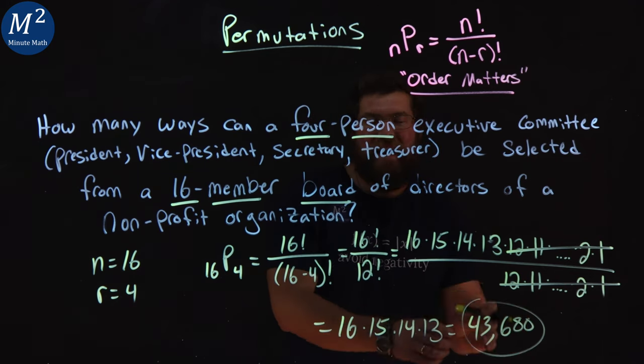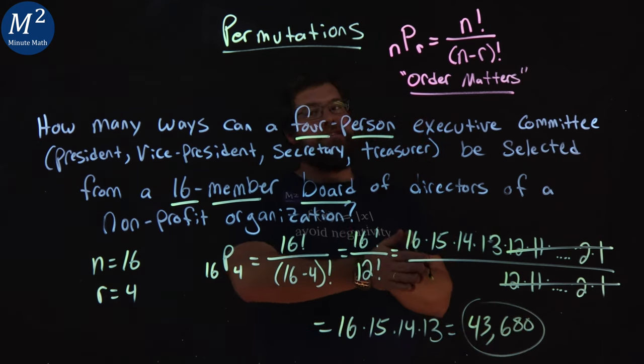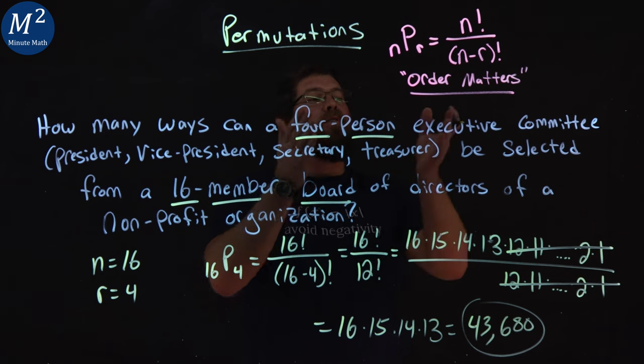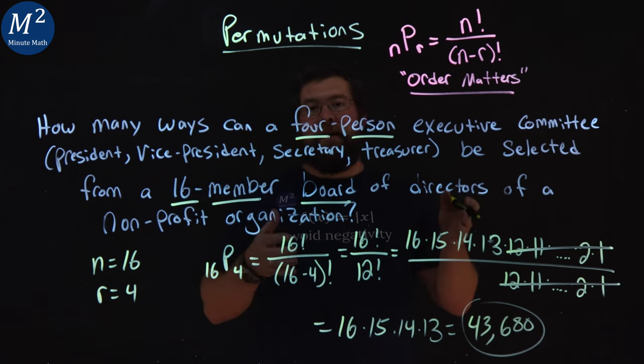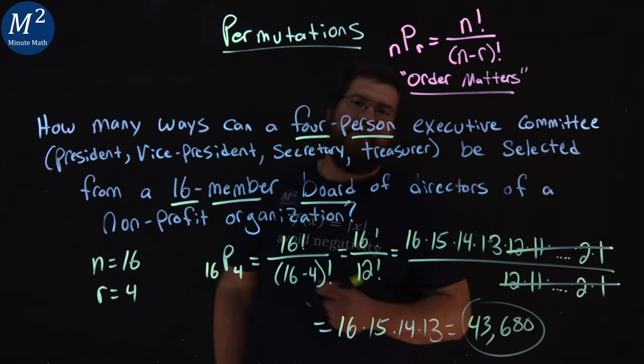And so there are 43,680 different ways that we can select a four-person executive committee from a 16-member board of directors for this nonprofit organization.